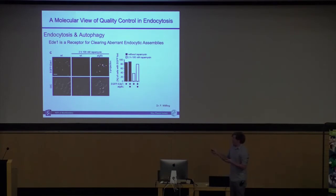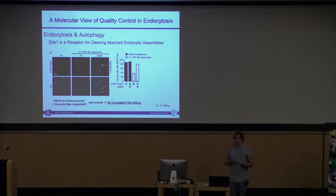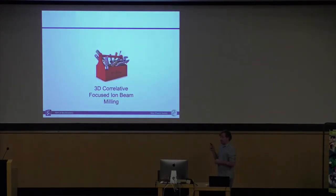We have these puncta that we find in cells, caused by a knockout of certain proteins. We see an accumulation of certain proteins at the cell membrane and we were wondering — what are they? You see there are maybe one or two of these guys sitting there, so we can't just cut open cells randomly and find it everywhere. What you need is 3D correlative FIB milling. Most people in our department thought the structures were too small and it wouldn't work on yeast, but we tried it anyway.